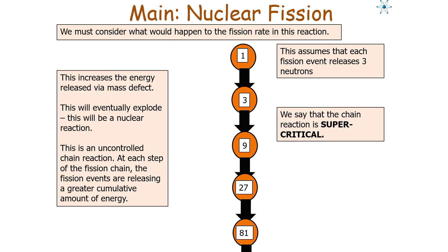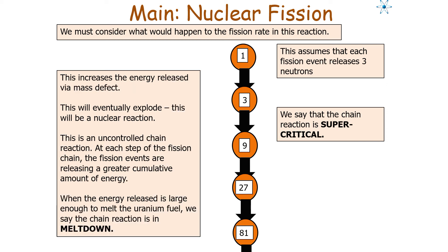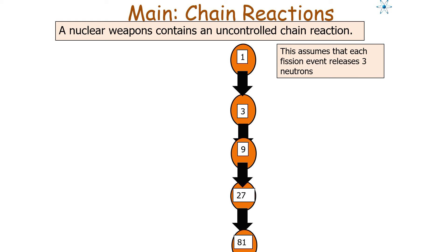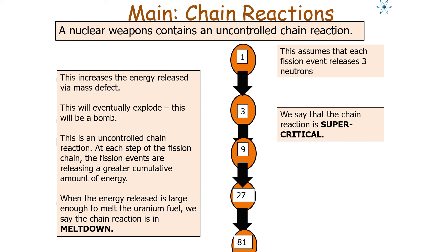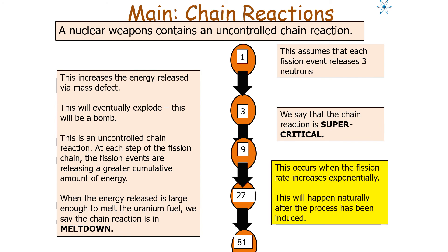At each step of the fission chain, the fission events release a greater cumulative amount of energy. When the energy is large enough to melt the uranium fuel rod, we say the chain reaction is in meltdown. Nuclear weapons contain an uncontrolled chain reaction. Our chain reaction is supercritical when the fission rate increases exponentially, which happens naturally after a process has been induced with nothing monitored.